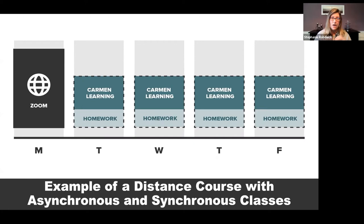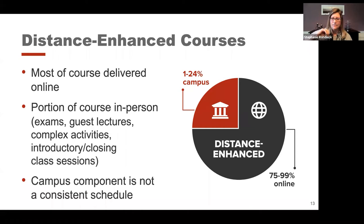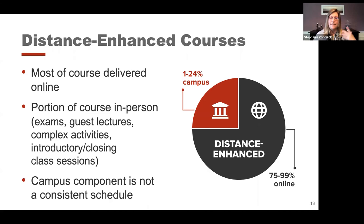Then at Ohio State we have a distance-enhanced course — other universities call it something slightly different. This means the course is mostly online, with a portion happening on campus ranging from a small amount to just under a quarter of the course. This is usually for things like coming in to take an exam in person, meeting at the beginning of the course to get to know each other, attending a guest lecture, or completing a complex activity that's better done in person. But generally it's mostly online with just a few in-person opportunities, and it's still not a consistent weekly schedule.